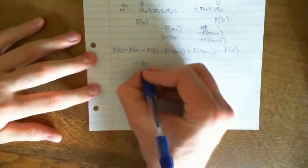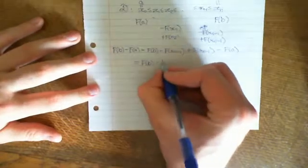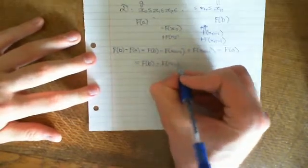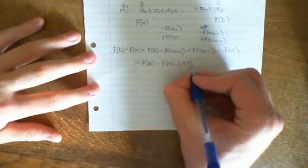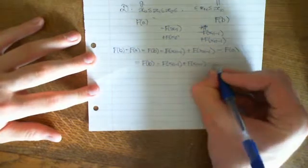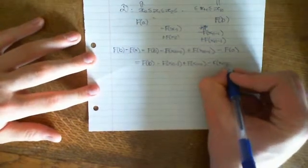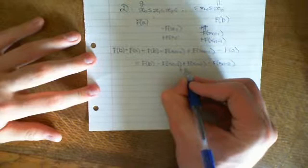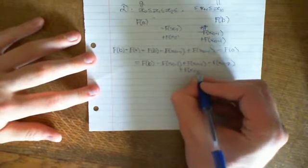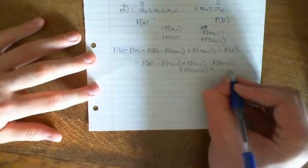What I end up with is that this is equal to F(B) minus F(xₙ₋₁) plus F(xₙ₋₁) minus F(xₙ₋₂) plus F(xₙ₋₂) all the way down, continuing on.